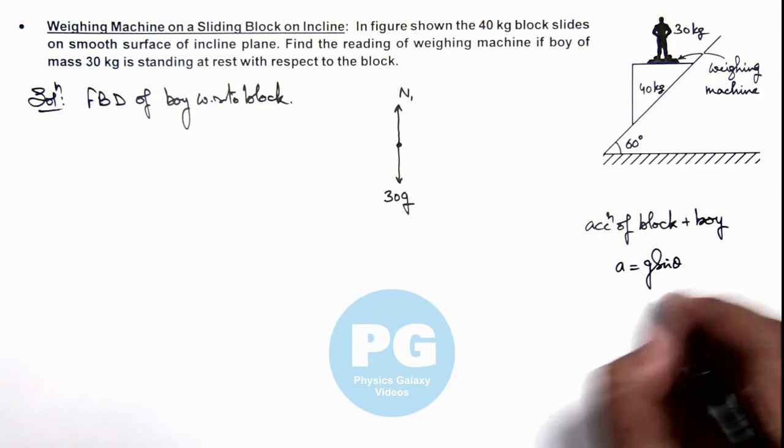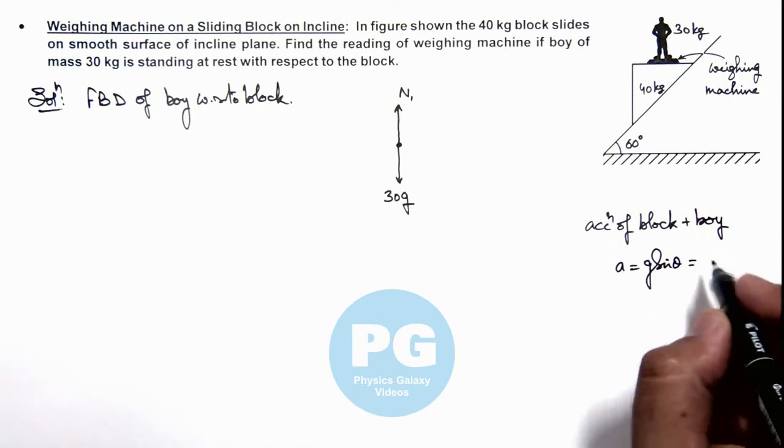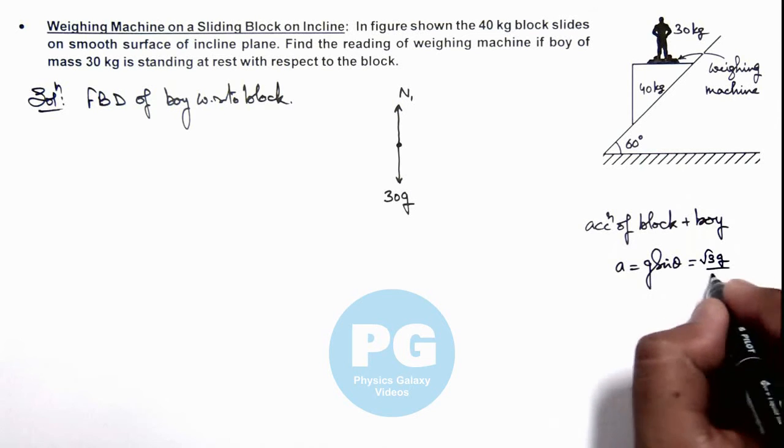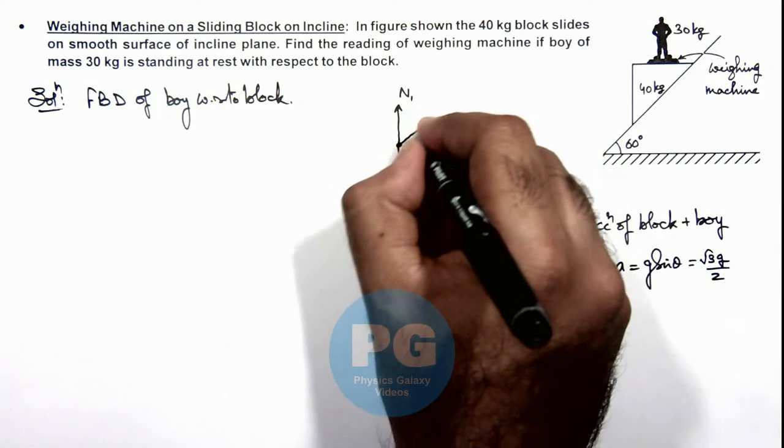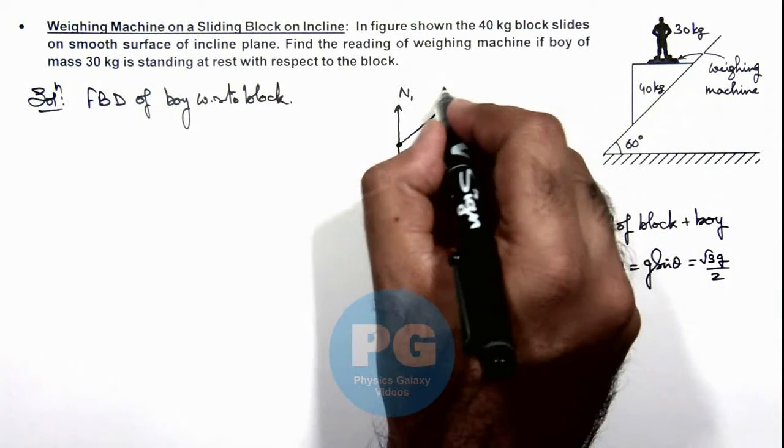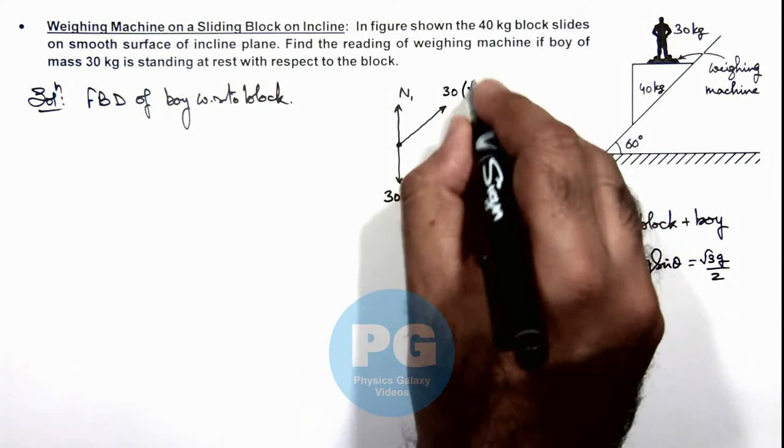So this will be equal to, as here θ is 60 degrees, g sin 60° will be √3g/2. So due to this acceleration of the block, the boy will experience a pseudo force in opposite direction and that will be mass of boy multiplied by the acceleration of block which is √3g/2.